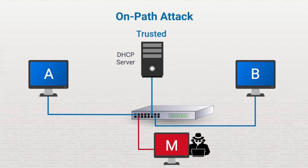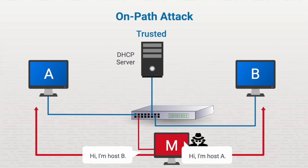Let's see how that works. First, they poison the ARP cache of end device B and tell B that they are A. Then they tell A that they are B. Once completed, the original connection between A and B is replaced with A sending information to M, and M forwarding the information to B and vice versa. At this point, M sees all the communication traffic between A and B.